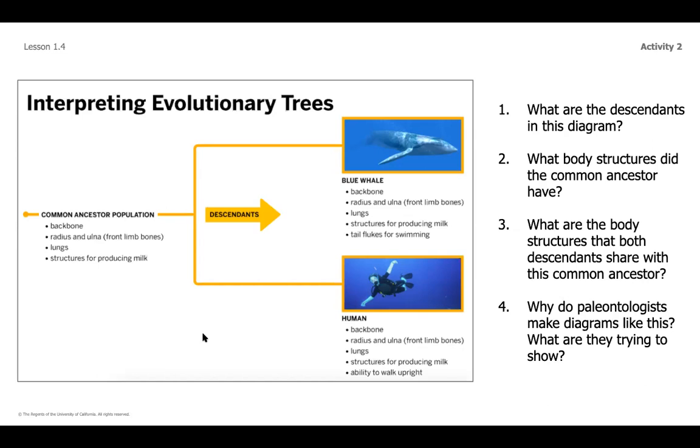Okay, so hopefully you were able to look at this and notice that the blue whale and the human, because they're in the same place as what we saw on the other side where the ostrich and the crocodile were, those are descendants. And then if we start to think about body structures, you should have compared these bullet points down here to find what are some common structures that they had that are going to show us that those two species are related to one another.